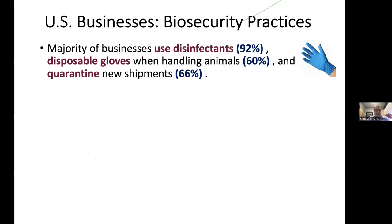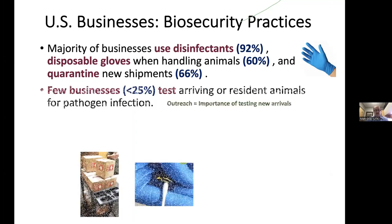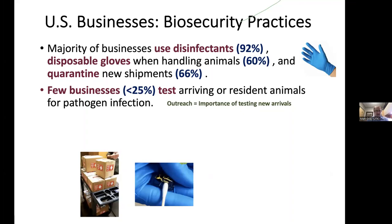We did find — comfortingly — that most businesses we surveyed use disinfectants, most use disposable gloves when handling animals, and most quarantine new shipments that come in. However, few businesses actually test animals even when they quarantine them — they just quarantine and if they don't die after a while, they put them into their general population. This really shows the importance of outreach and the importance of testing new arriving shipments.